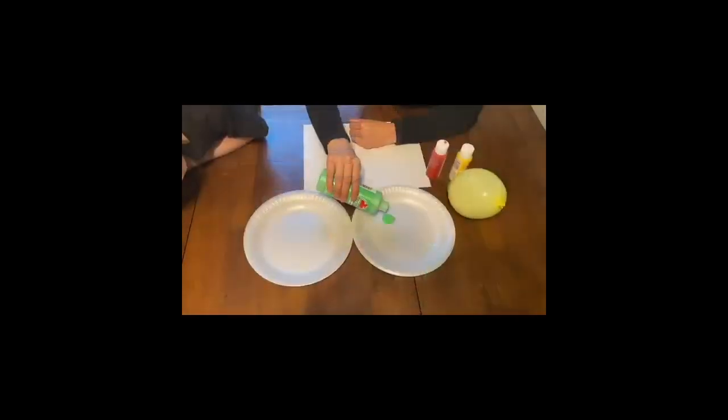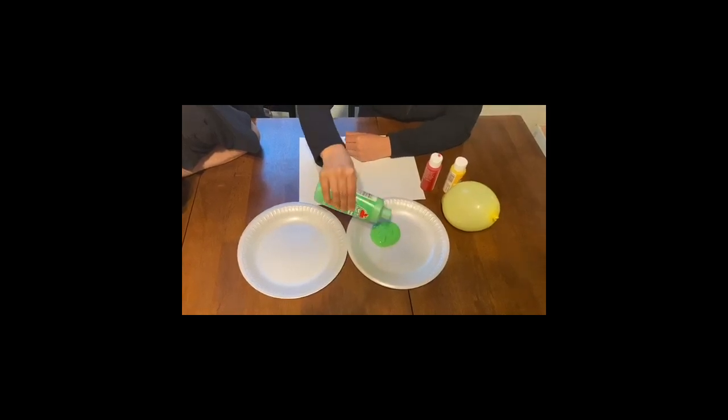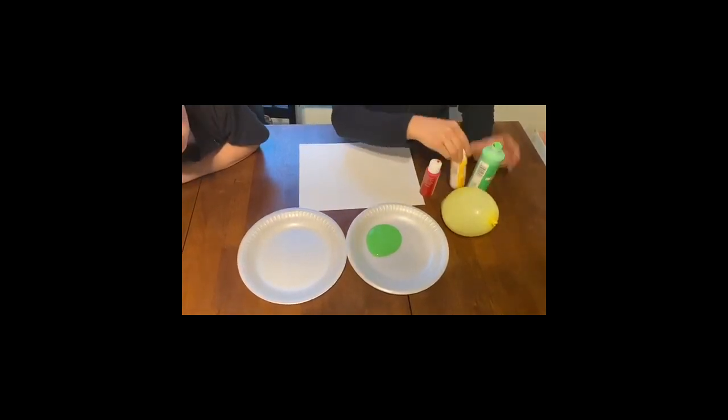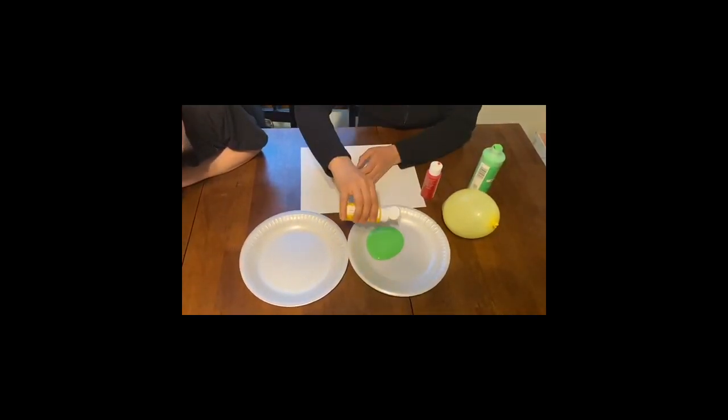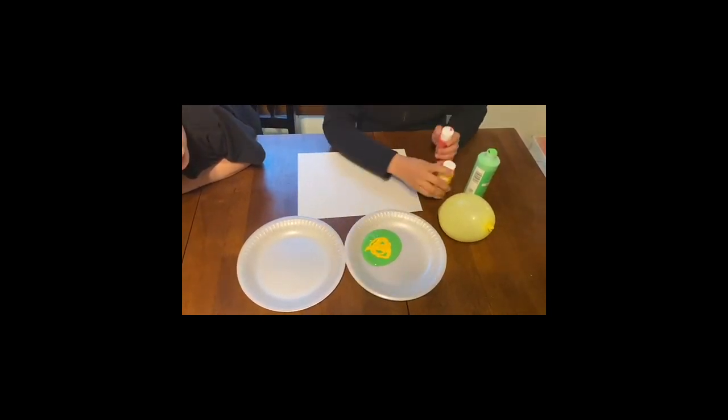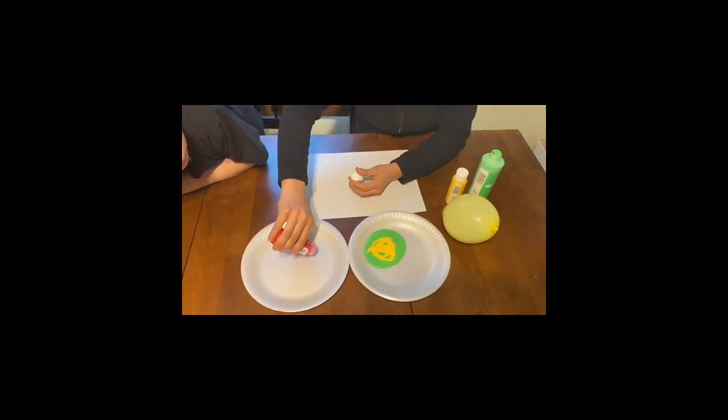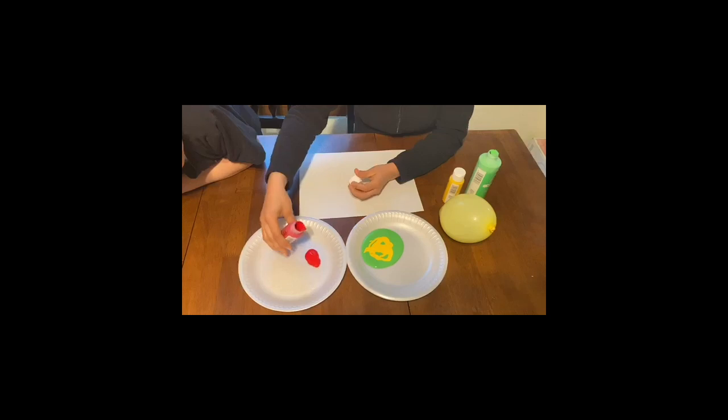Parents, help your child to pour the paint on the container. We are gonna need green and we're gonna mix a little bit with yellow. In the second container we're gonna pour red, but we're not gonna need that much red.